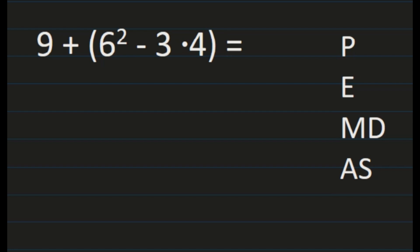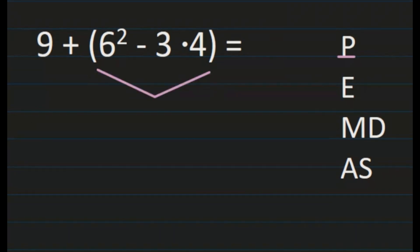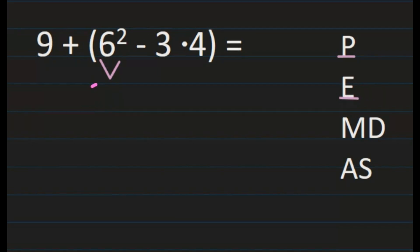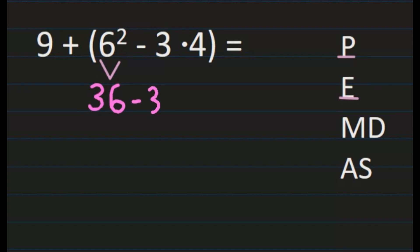In this example, notice that we have some grouping symbols and exponents. Using PEMDAS, we start with P — grouping symbols — so we look inside the parentheses. Do we see exponents inside the parentheses? Yes, we have 6 squared. So our first step is working inside the parentheses with the exponent. 6 squared is 6 times 6, which is 36. Write in the rest of the problem carefully, paying attention to signs and grouping symbols.